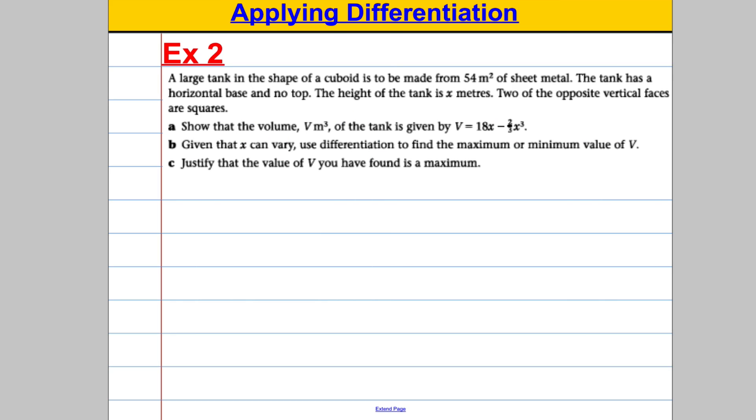Now, the last part, it asks us to justify if it's a maximum or minimum. We're going to work out d²V/dx². Now, remember that dV/dx was equal to 18 subtract 2x squared. So differentiate that one more time and we get ourselves negative 4x. And we're going to work out d²V/dx² for the particular x value we found in the question. It was x is 3. So we're working out at x is 3 and we get negative 4 multiplied by 3 which is equal to negative 12. Therefore, V is a maximum at x equals 3.